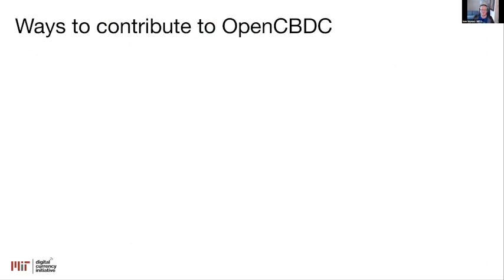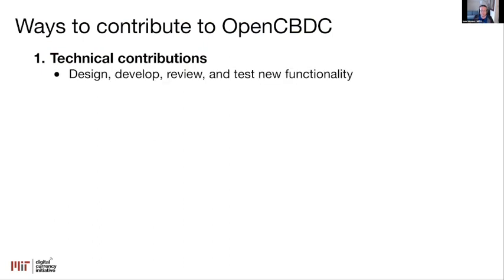Hopefully that was a useful pitch on why this feels important. Let me now talk about how you can get involved — there are plenty of ways to do so. The first and maybe most obvious is technical contributions. You can help us design, develop, review, and test new functionality — figuring out what is actually capable of being done in a CBDC. Refactoring and improving the code we have is also incredibly important — it's one of the most important ways to help new people get involved and make it possible for new people to contribute.